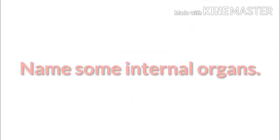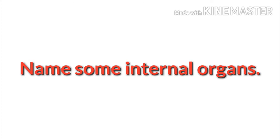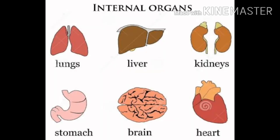Children, can you name some internal organs? Internal organs are not visible because they are inside our body. These are some of the internal organs: lungs, liver, kidneys, stomach, brain and heart.